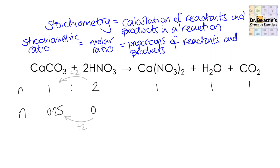When working out the products, we look at the relationship between the known value of 0.5 and the unknown. It's a 2 to 1 ratio — coefficients are 2 and 1 — so we get 0.25 produced. The same 2 to 1 relationship applies to water and to carbon dioxide. We can use these molar ratios to work out quantities whether in mass, in moles, or for gases, in volumes. This is a really useful tool linked to a balanced equation.